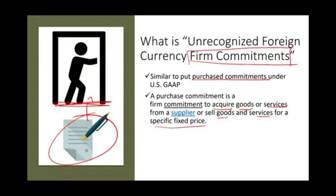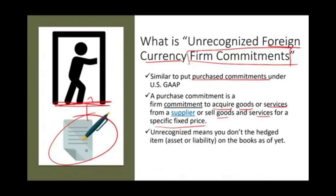For the purpose of this lecture, we are dealing with a foreign currency commitment. You sold something and you're going to be receiving money in a foreign currency, or you bought something and you have to pay money in a foreign currency. So you have an unrecognized foreign currency commitment. It's unrecognized because there are no assets or liabilities on the books.